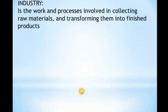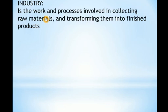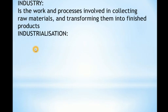Industry, as a term, is the work and process involved in collecting raw materials — very important — and transforming them into finished products. Raw materials are items or products that we use to manufacture or produce finished goods. Examples include cotton, fish, and iron ore, among others. The word 'transforming' means turning something into something new. When a raw material is turned into finished products, that is manufacturing, but the term industry involves even the process of collecting those raw materials.